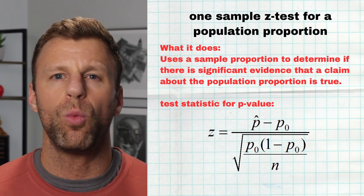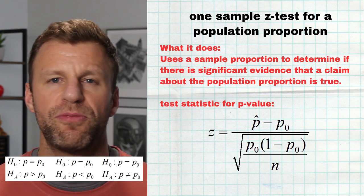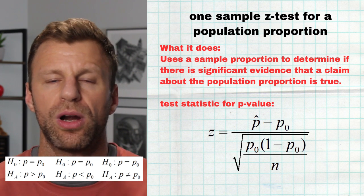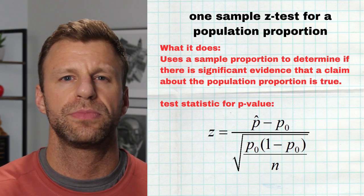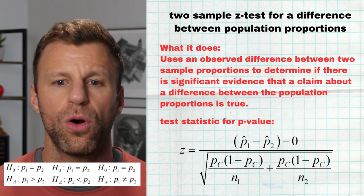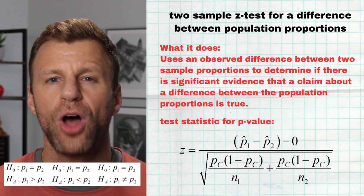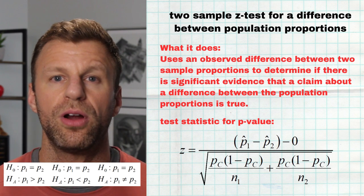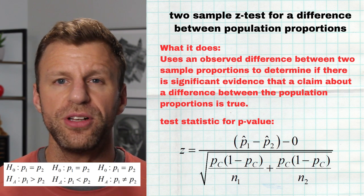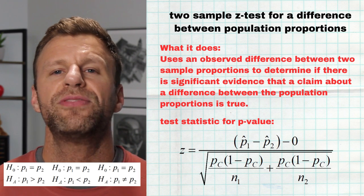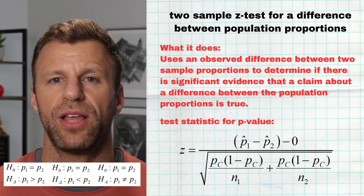There are nine different types of significance tests that could pop up on the AP exam. First is a one-sample z-test for a population proportion — we're given a population proportion we thought was true but claim it's lower, higher, or simply not equal to. We get a sample proportion, locate it on our sampling distribution based on the null being true, calculate our p-value, and make our conclusion. The second type is a two-sample z-test for the difference between two population proportions. The null is that the two population proportions are equal, and the alternative is that one is more than, less than, or simply different from the other. We take our observed difference, subtract zero, divide by standard error to get our z-score, calculate our p-value, and make our conclusion.